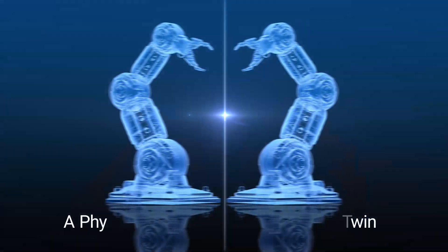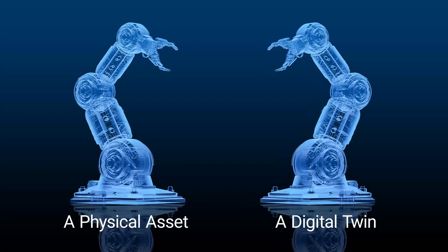Let us get started. A digital twin is a digital representation of a physical asset, process, or system. It helps industrial companies optimize production processes and prevent asset failures by predicting them in advance.